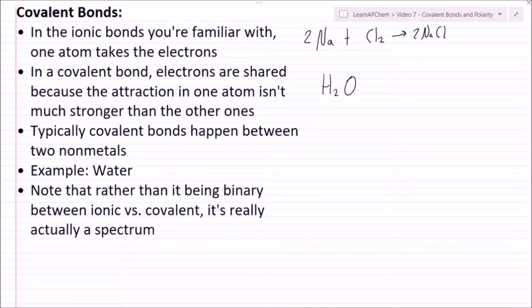Typically, covalent bonds happen between two non-metals. Again, our example is water. Just note that rather than it being binary between ionic versus covalent, it's really actually a spectrum. Some bonds are more ionic than others and some are more covalent than others.